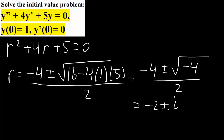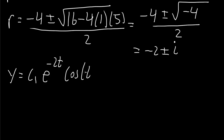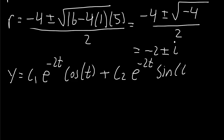Now we write our general equation. y equals c1 e raised to negative 2t times cosine t — because we have plus or minus i, that's why we write cosine t — plus c2 e raised to negative 2t times sine t. This is our general equation.